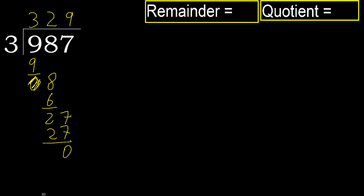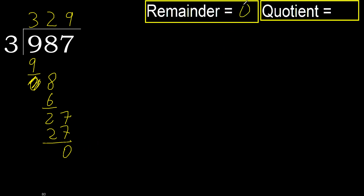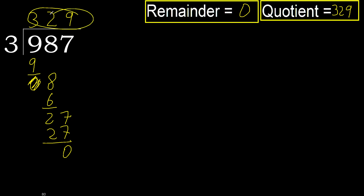There is no next number, therefore we finish. The result is 0 remainder. Therefore, 987 divided by 3 is 329.